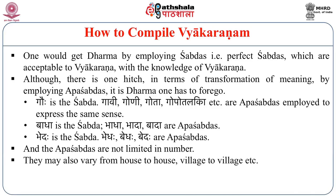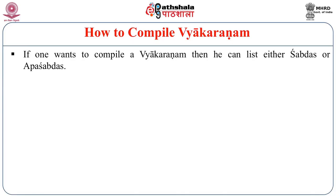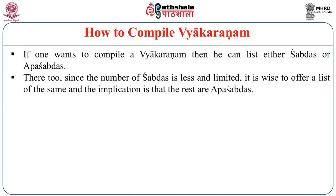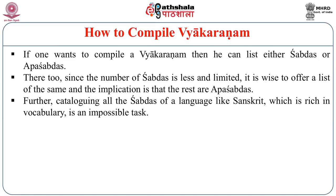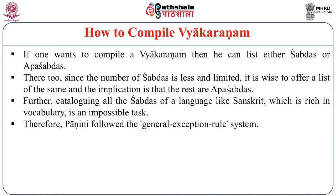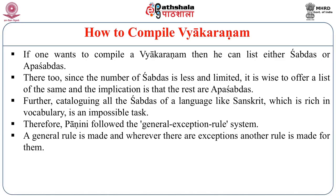Apashabdas may vary from house to house, village to village, etc. If one wants to compile a Vyakaranam, one can list either Shabdas or Apashabdas. Since the number of correct Shabdas is less and limited, it is wise to list those — with the implication that the rest are Apashabdas. Furthermore, cataloguing all the Shabdas of a language as rich as Sanskrit is an impossible task. Therefore, Panini followed the general-exception rule system: a general rule is made, and wherever there are exceptions, another rule covers them.